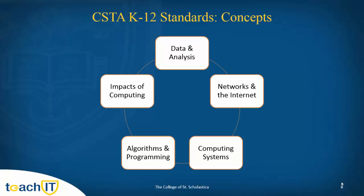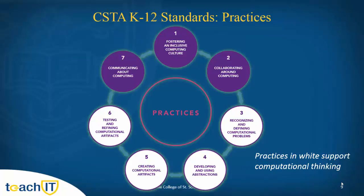In the standards and framework you're going to see these five concepts: data and analysis, networks and the internet, computing systems, algorithms and programming, and impacts of computing. Those are the main strands throughout the framework and standards. You'll also see a focus on seven practices: fostering an inclusive computing culture, collaboration, recognizing and defining computational problems, developing and using abstractions, creating computational artifacts, testing and refining computational artifacts, and communicating about computing. The ones highlighted are particularly key to the idea of computational thinking.